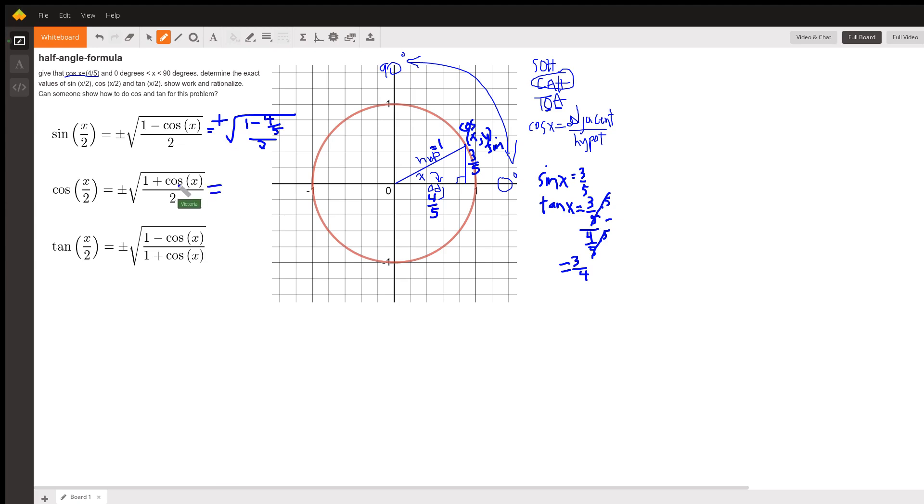The cosine of your angle divided by 2, this is going to be plus or minus the square root, this time of 1 plus the cosine, and the cosine is 4 fifths. All over 2, and the tangent is plus or minus the square root of 1 minus 4 fifths, divided by 1 plus 4 fifths. And so it's just a matter of doing these complex fractions.